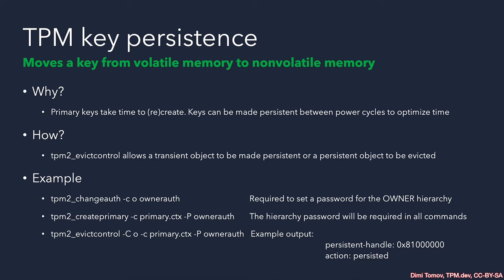Upon success, you receive back a handle — the number of the slot where the key was placed. You have the option to select which slot you want, but typically it's best to either allocate the next available slot and handle the response, or have a predefined set of slots. For example: digital signing key at slot 0, TLS key at slot 1, attestation key at slot 2, and remaining slots available as needed. This is a very good approach to design in advance.